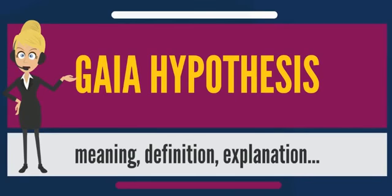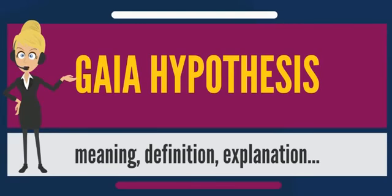Gaian hypotheses suggest that organisms co-evolve with their environment — that is, they influence their abiotic environment, and that environment in turn influences the biota by Darwinian process. Lovelock in 1995 gave evidence of this in his second book, showing the evolution from the world of the early thermoacidophilic and methanogenic bacteria towards the oxygen-enriched atmosphere today that supports more complex life.